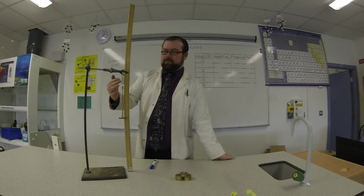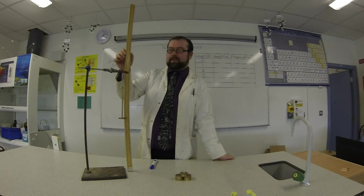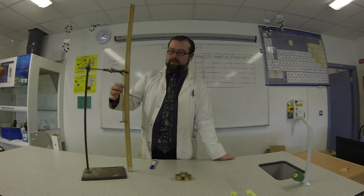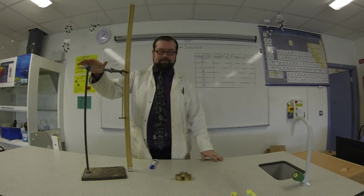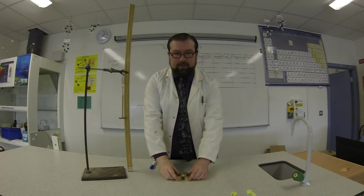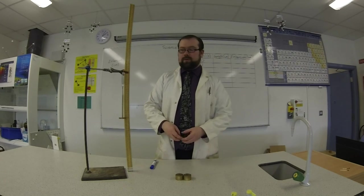So here we are, we have our spring, we're hanging this weight from it. We have a meter stick so we can measure what happens—we're going to see it's going to get longer and shorter here. I'm just holding it all up with a retort stand. These are the weights we're going to add. Each of these is one Newton or 100 grams.